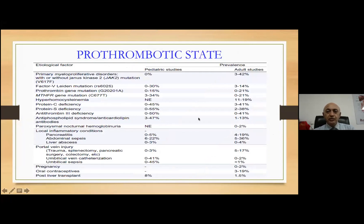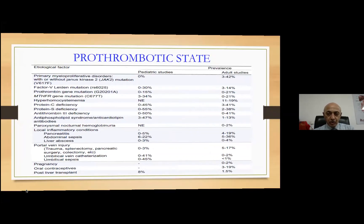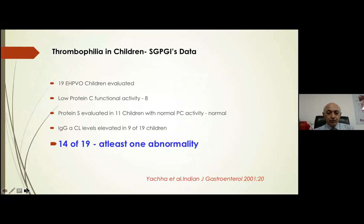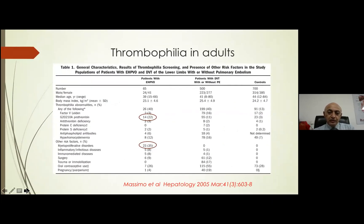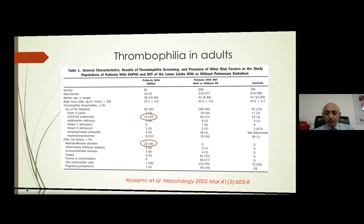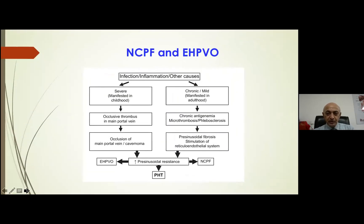In both the pediatric age group and adults, various prothrombotic states have a definite association with development of extra-hepatic portal vein obstruction or NCPF. There is a publication from Dr. Yachha's group from SGPGI Lucknow in which 14 out of 19 patients with extra-hepatic portal vein obstruction had one or two abnormalities related to the prothrombotic state. A publication from Japan clearly showed that about one fifth of patients in their series had some mutational change in one of the prothrombotic genes.